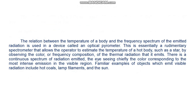That is, with increasing temperature, the body emits more thermal radiation and the frequency of the most intense radiation becomes higher. The relation between the temperature of a body and the frequency spectrum of the emitted radiation is used in a device called an optical pyrometer. This is essentially a rudimentary spectrometer that allows the operator to estimate the temperature of a hot body, such as a star, by observing the color or frequency composition of the thermal radiation it emits. Familiar examples of objects which emit visible radiation include hot coals, lamp filaments, and the sun.